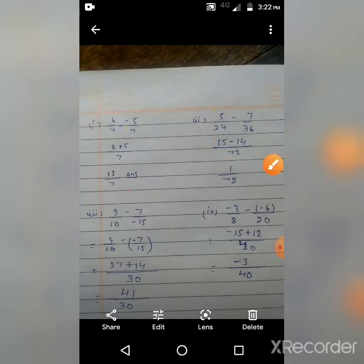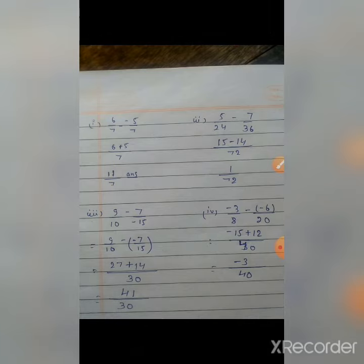15 minus 24 and then we have by 72. Sorry, 24 not 14, from 15 to 14. Minus so 1/72. This is our third question, guys: 9/10 minus 7 by negative 15.